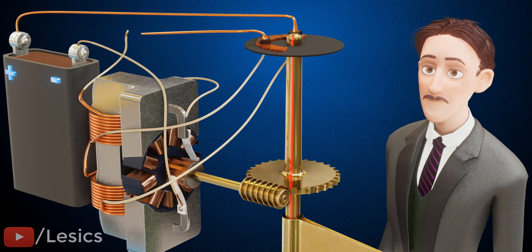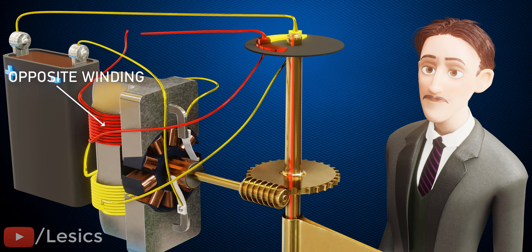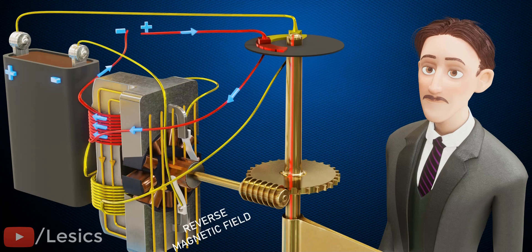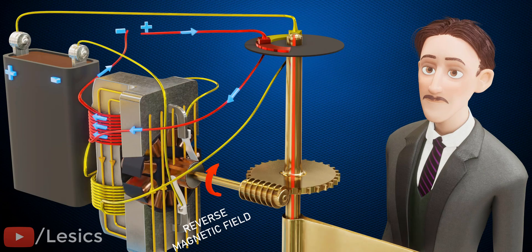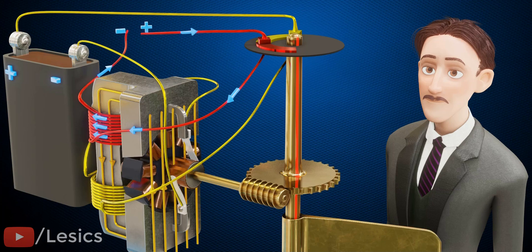To easily distinguish between the two field coil sets, let's give them different colors. Here, the field coil of the red set is wound in the opposite direction. So, if powered, it will produce a magnetic field in the opposite direction and the motor will turn opposite. Now, the only question is, how do you power the red field coil set?